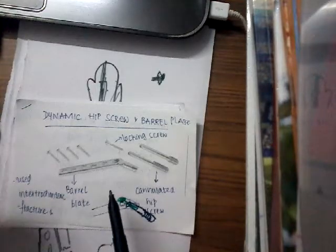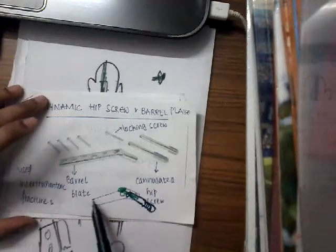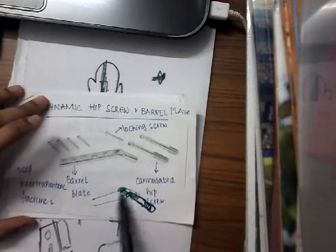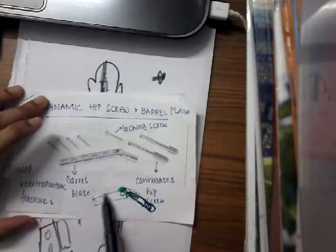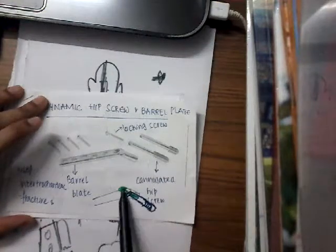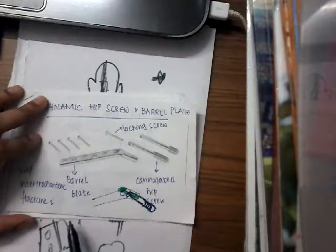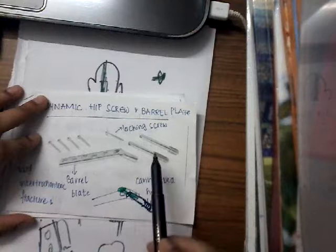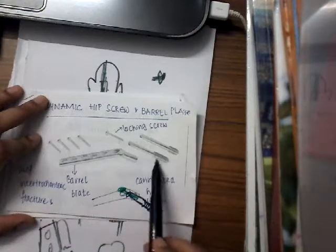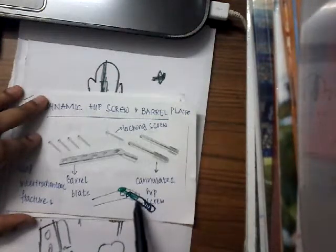Let me tell you how this dynamic hip screw fits. This is the barrel plate — the one I drew with pen. To this barrel plate, you will first attach the cannulated screw from below.